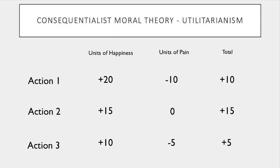Let's look at an example of utilitarianism. Looking at this slide, we can see three actions — action one, action two, and action three — all potential actions we can take in relation to some moral dilemma. Action one produces 20 arbitrary units of happiness and 10 units of pain, so on balance it produces 10 units of happiness overall. Action two produces 15 units of happiness and 0 units of pain, so overall it produces 15 units of happiness. Finally, action three produces 10 units of happiness and 5 units of pain, so overall it produces 10 units of happiness.